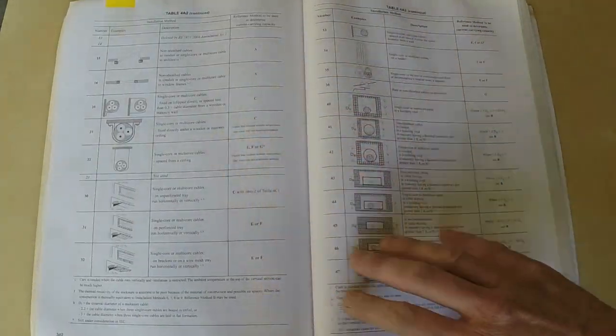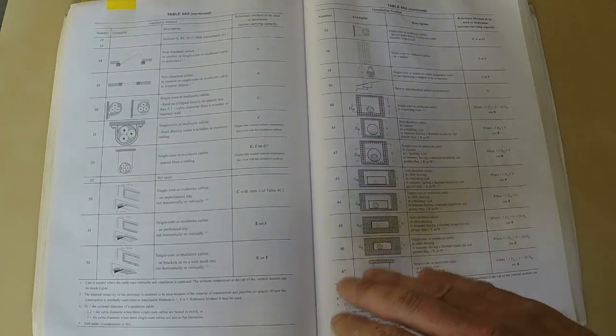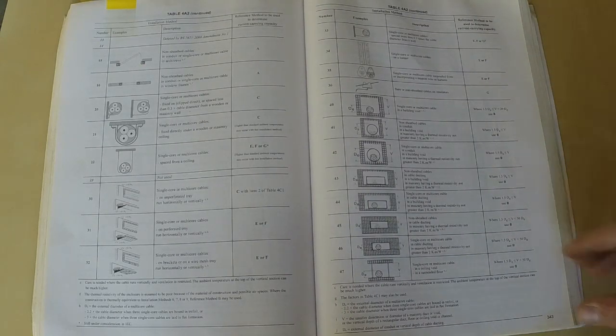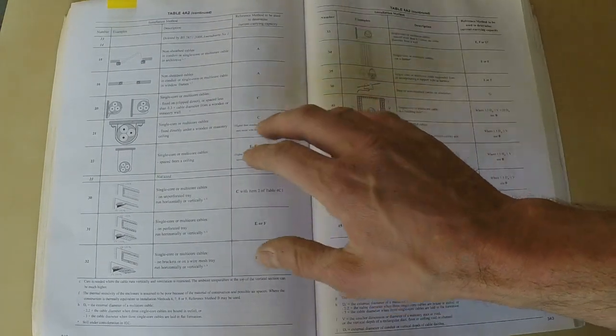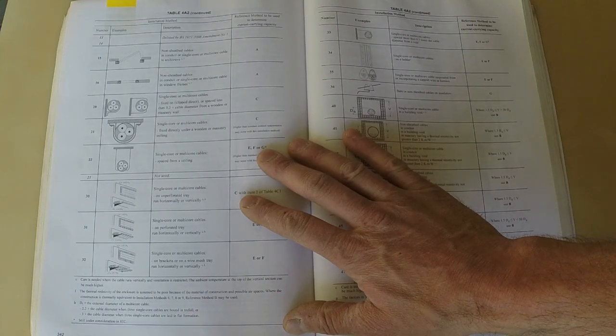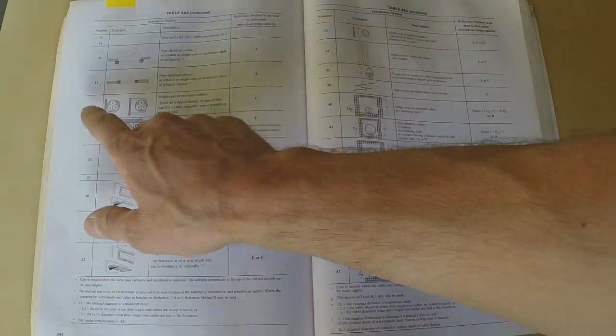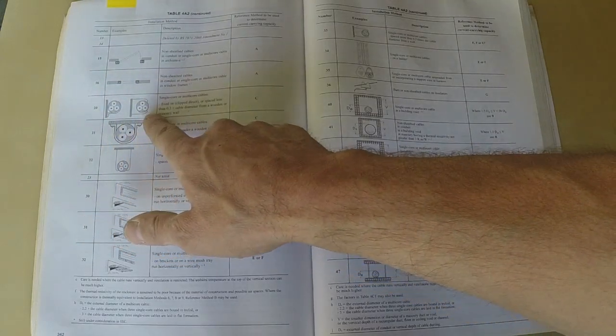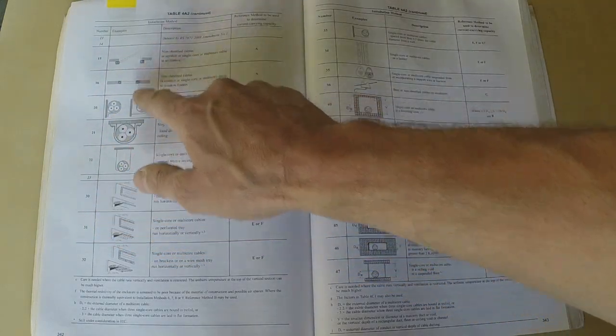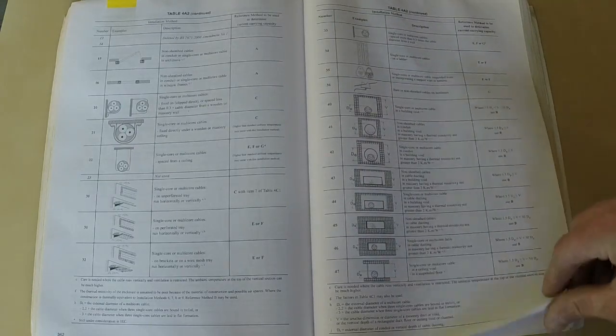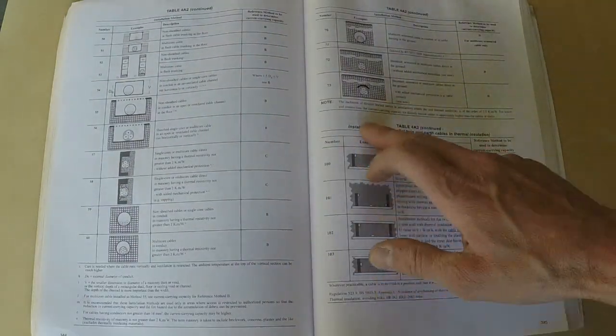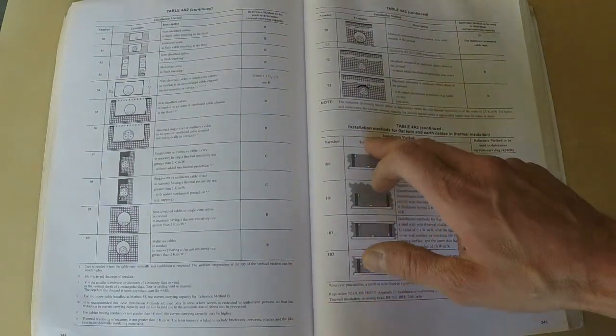Pages 342 to 347 of this regs book—if you're using a different regs book just check the pages, they might not tally up with this one. We're going to use method 20, which is clip direct. They're all different methods, with these ones being for twin and earths. You can read what method applies to you.